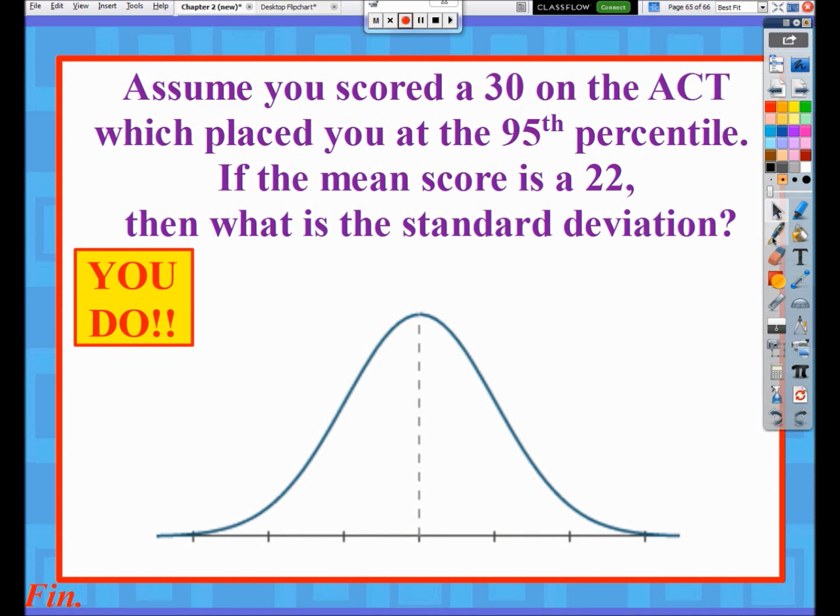Here's kind of a fun problem. This relates back to what we did earlier with the z-score stuff. Assume you scored a 30 on the ACT, which placed you at the 95th percentile. If the mean of the ACT is 22, then what's the standard deviation? I'm not saying that these are legitimate numbers that the mean really is 22.